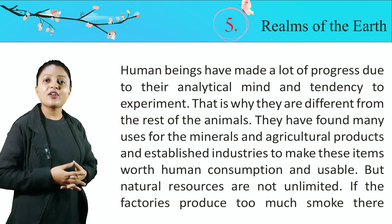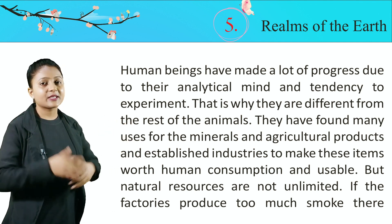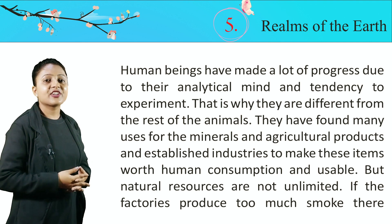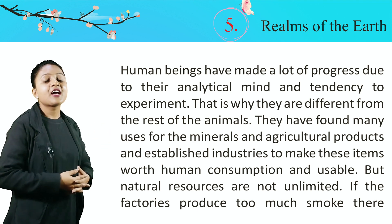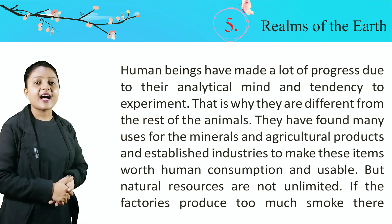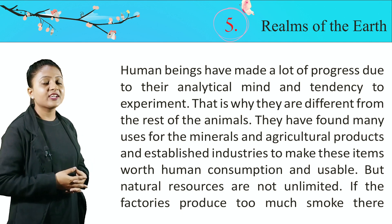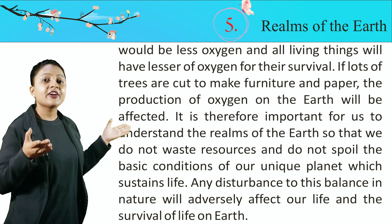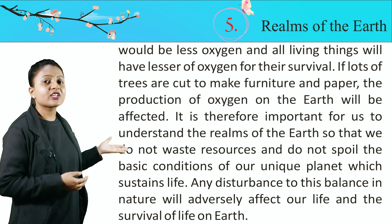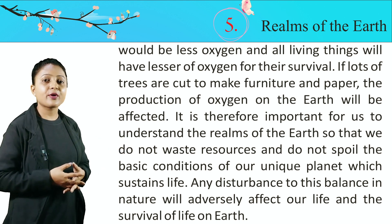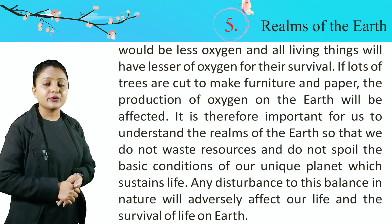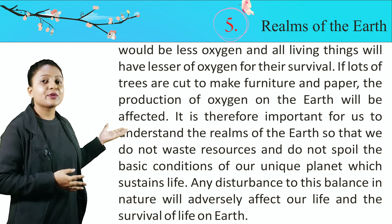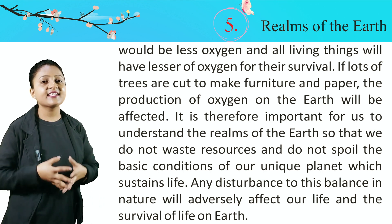Human beings have made a lot of progress due to their analytical mind and tendency to experiment. That is why they are different from the rest of the animals. They have found many uses for minerals and agricultural products and established industries to make these items usable. But natural resources are not unlimited. If factories produce too much smoke, there would be less oxygen for all living things. If lots of trees are cut to make furniture and paper, the production of oxygen on the earth will be affected. It is therefore important for us to understand the realms of the earth so that we do not waste resources and do not spoil the basic condition of our unique planet which sustains life. Any disturbance to this balance in nature will adversely affect our life and the survival of life on the earth.